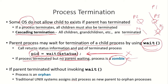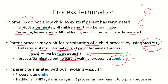For example, suppose we have a parent process P1 and a child process P2. When P1 created P2, P2 is running but P1 has not waited for the child. So when P2 terminates, it does not know where to return the status information because the parent is not waiting for it. In that case, this process will become a zombie.